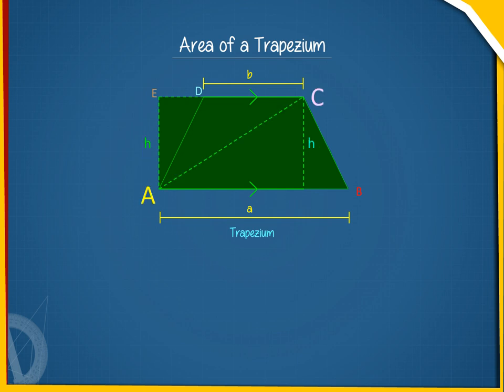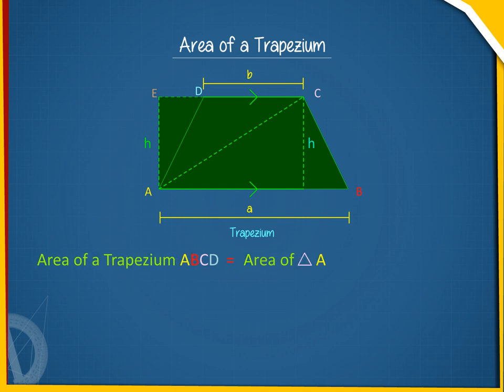Let AC be its one diagonal. Then, area of trapezium ABCD equals area of triangle ACB plus area of triangle ADC, which equals half A into H plus half B into H, equals half (A + B) into H.